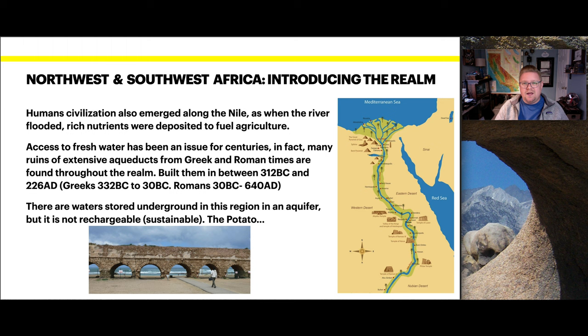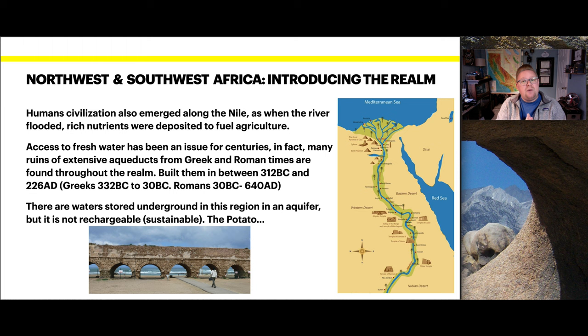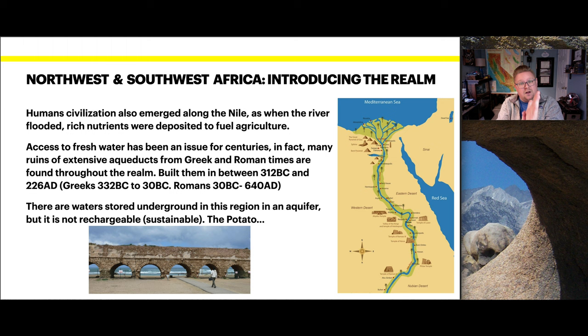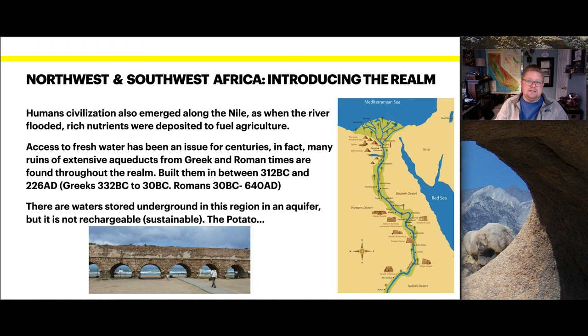Historically, there have been times of great flooding and times when water was more scarce. When the Nile spread out and fueled oases around it, civilizations were able to spread out. But during times of severe drought, when fresh water was limited, people moved back along the Nile. One of the largest crops produced in this area is the potato — they use additional pumped fresh water, and it's easy to harvest because it's in sand. They pack it in peat moss imported from Ireland.